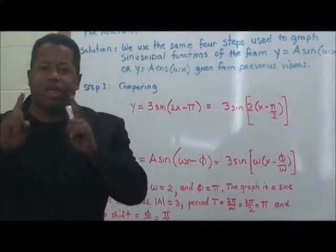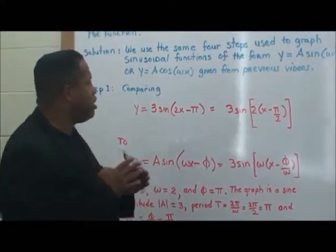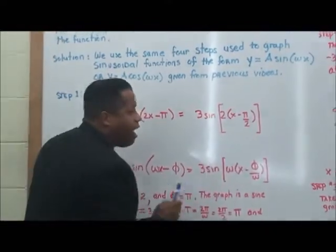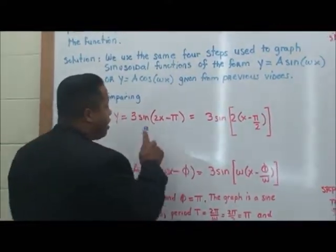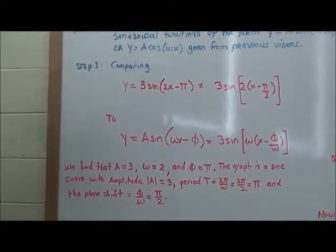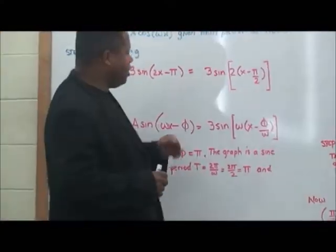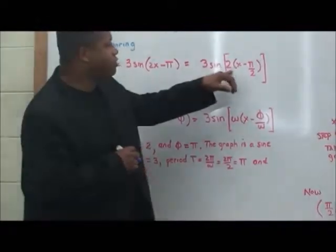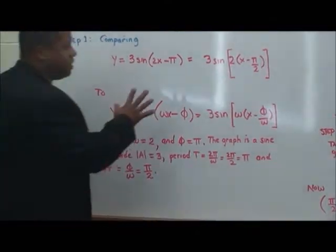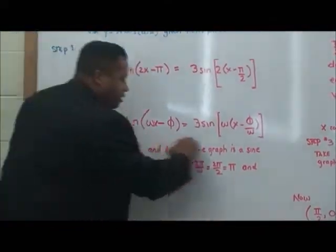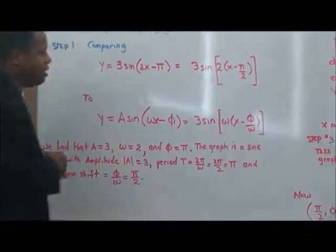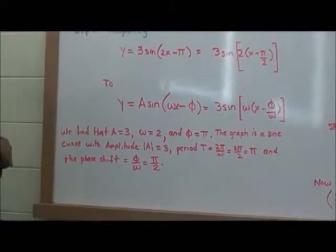So 3·sine(2(x minus π/2)) is compared to the standard form, with everything plugged in respectively. We find that A equals 3, ω equals 2, and φ equals π.